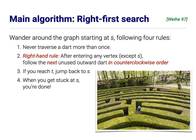And as I said, the main algorithm, right-first search is really like a maze-following algorithm. I'm going to start wandering around the graph from S following four simple rules. The first rule is I'm never going to traverse a dart more than once. The second, the right-hand rule, says whenever I walk into a vertex, except S, the way that I leave that vertex is I follow the next unused dart out of that vertex in counterclockwise order around the vertex. I'll show you an example of this. It'll make sense in a second. The third rule is whenever I reach the target vertex T, I teleport back to S. And the last rule is if I ever get stuck at S, if I ever find myself at S with no unused outgoing darts, I'm done. The algorithm's finished.